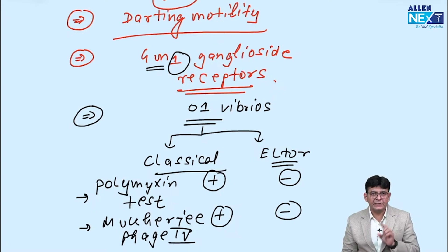And Eltor is a place in Saudi, near the, it was a quarantine station and it was isolated in one of the Hajj pilgrimage. And this particular Eltor is a place name. From there, this particular name have come. So polymyxin sensitive is which one? Classical and Mukherjee Phage IV eats away which particular growth? The classical growth. So these two tests easily differentiate between classical and Eltor.